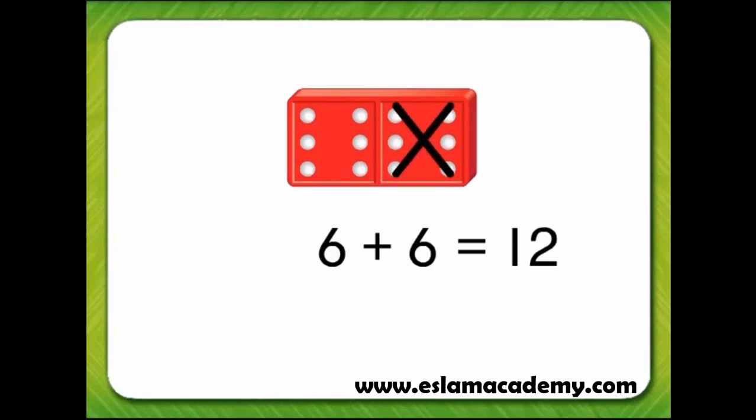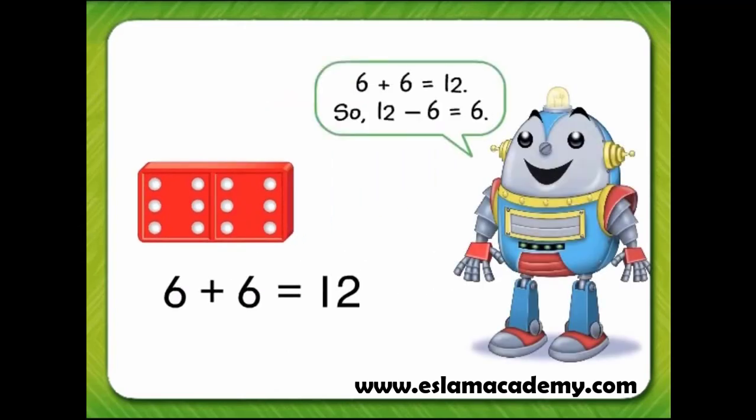If we take away 6 dots, how many dots are left on the domino? We can also use a doubles fact to help us subtract. Think. 6 plus 6 equals 12. So, 12 minus 6 equals 6.